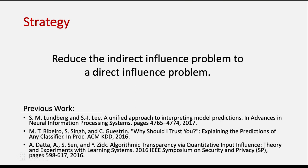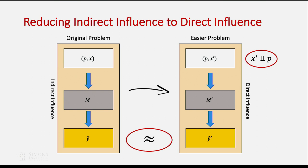The general approach is: we take the original problem where we have a protected feature p and a bunch of other features x, and we're looking at the indirect influence on some model making a prediction y-hat. We ask, can I swap my features out for a new set of features p and x-prime, where x-prime is similar to x except x-prime is independent of p — there's no relationship between p and x-prime? Because of that, we change our model to m-prime so that it makes the same predictions on p, x-prime as m would have made on p, x. We argue that direct influence on this new model is the same as the original indirect influence.